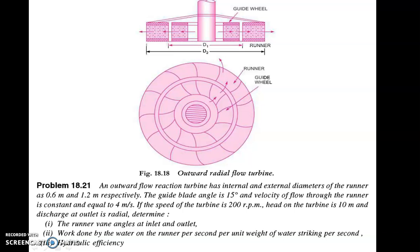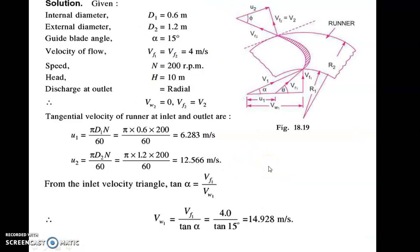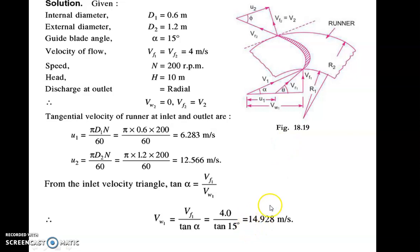We were looking at the numerical on outward flow reaction turbine. We have come up to Vw1, which was equal to Vf1 upon tan of alpha, so you can calculate Vw1. Once you calculate Vw1, next you can also use the formula tan of theta, which is equal to Vf1 upon Vw1 minus u1.